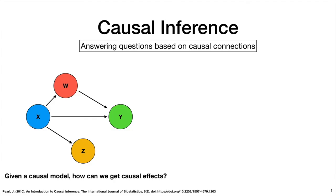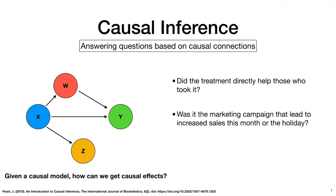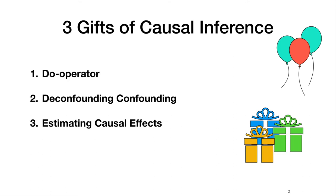Here we're talking about causal inference, which aims at answering questions about cause and effect. Given a causal model, here we have a directed acyclic graph, which I talked about in the previous video. From that, how can we estimate causal effects? For example, how can we estimate the effect of X on Y? Some examples of questions that fall under the umbrella of causal inference are: did the treatment directly help those who took it? Was it the marketing campaign that led to increased sales this month or the holiday? How big of an effect would increasing wages have on productivity? These are very practical and significant questions that may not be so readily answered using traditional means. I'll try to highlight what causal inference is good at through what I call the three gifts of causal inference.